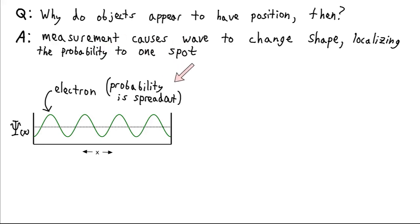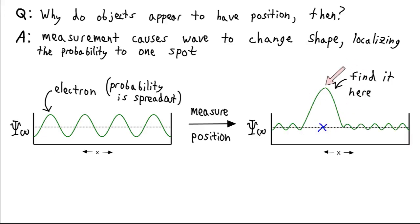And when it changes shape, it goes from having its probability all spread out like this to having its probability localized in some position. So initially there's, you know, maybe a 25% chance of finding our electron here or 25% chance we find it here or here or here.